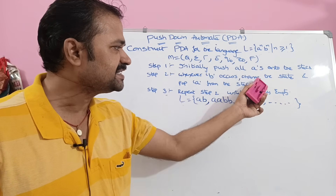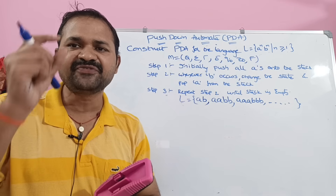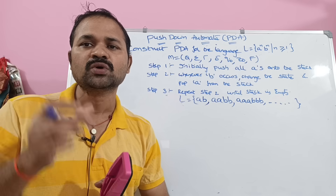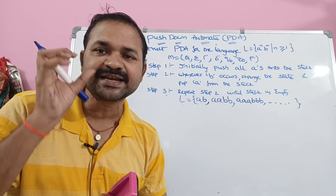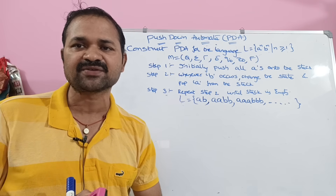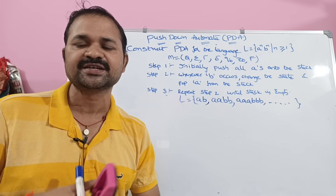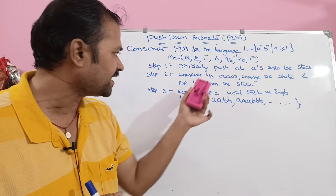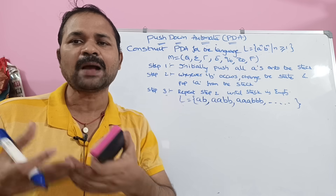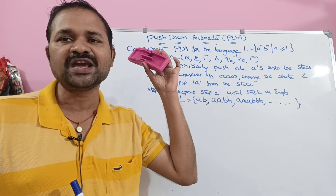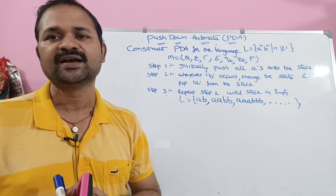Step 2: Whenever B occurs, change the state and pop A from the stack. So if we read B, we have to change the state — but only for the first pop operation. For the remaining pop operations there is no need to change the state. And pop A from the stack. So whenever the input symbol is B, we have to change the state and pop the stack.